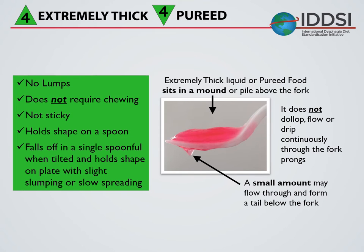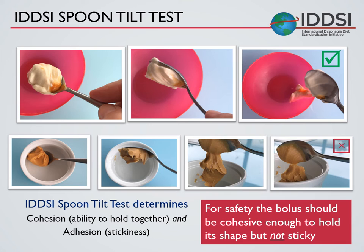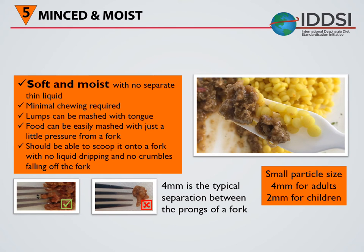At level 4 there's no flow, so we wouldn't recommend that you use the flow test. Instead, it can be tested on a fork by observing whether the fluid would sit in a mound above the fork prongs. It's also important to check that a material is not too sticky, and that's where we have the spoon tilt test. A spoonful of the material should fall off easily with a light flick and should not leave a sticky residue. This is intended to give an indication as to whether there would be residue when swallowing.